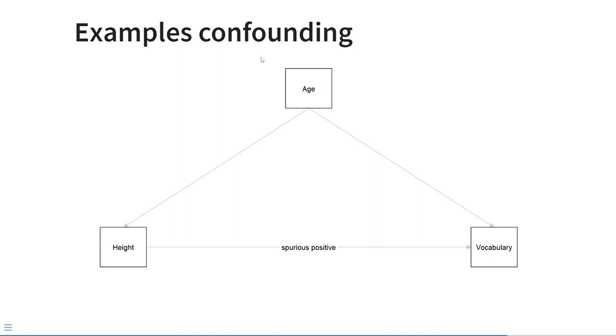Another example of confounding could be found in developmental psychology. In this case, the variables are the child's age, the child's height, and the child's vocabulary. How many words do they know? So age is a mutual cause of height and of vocabulary because older kids tend to be taller and they tend to know more words. But if you ignore age and you just look at the relationship between height and vocabulary, you would find a spurious positive effect of height on vocabulary. So it appears that being taller causes kids to know more words. But if you would control for age, this effect would disappear. Just like if you were to control for smoking, this spurious negative effect between exercise and lung cancer would also disappear.